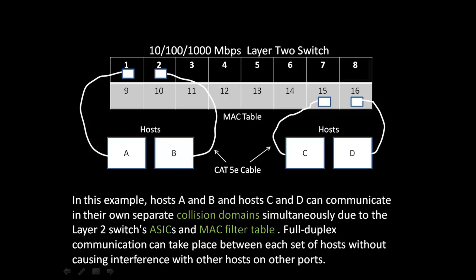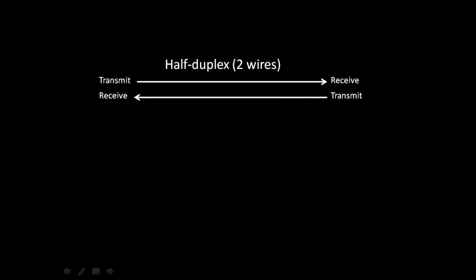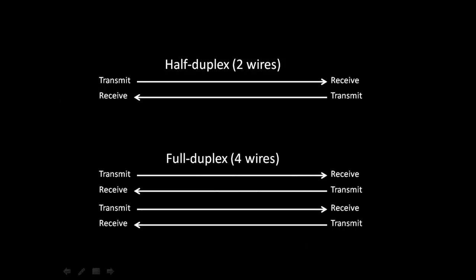Full duplex communication can take place between each set of hosts without causing interference with other hosts on other ports. In half-duplex, when two hosts are communicating, they must share transmit and receive lines. In full-duplex, or four wires, each host can have its own dedicated transmit and its own receive.